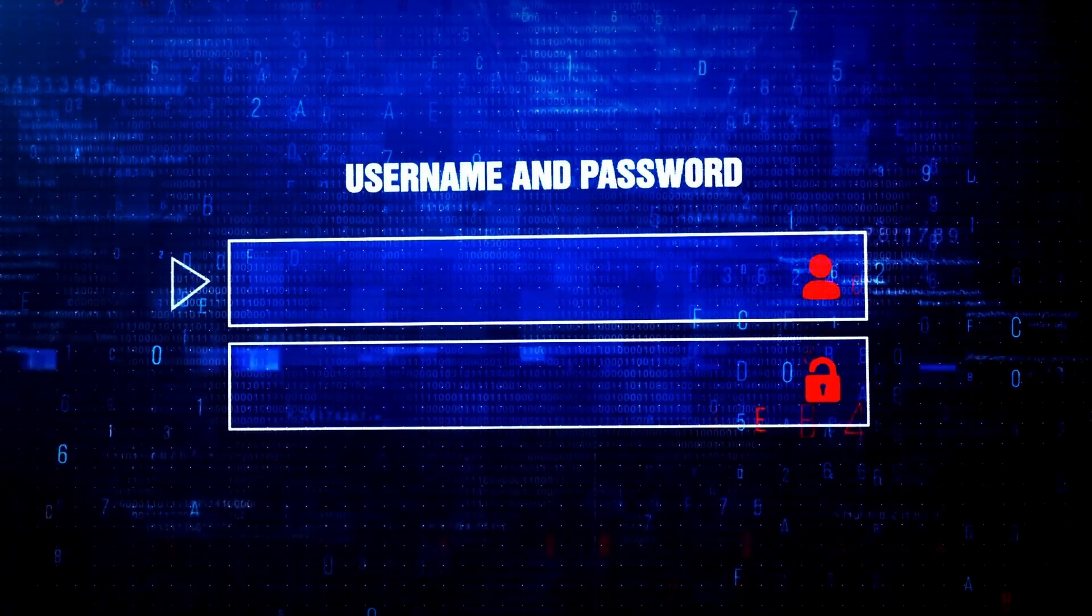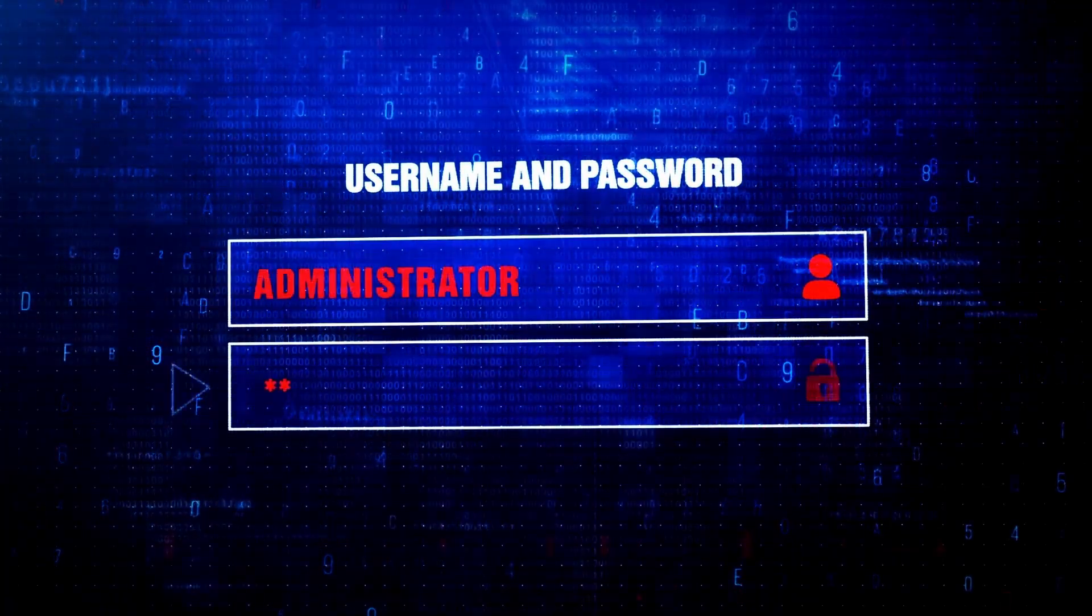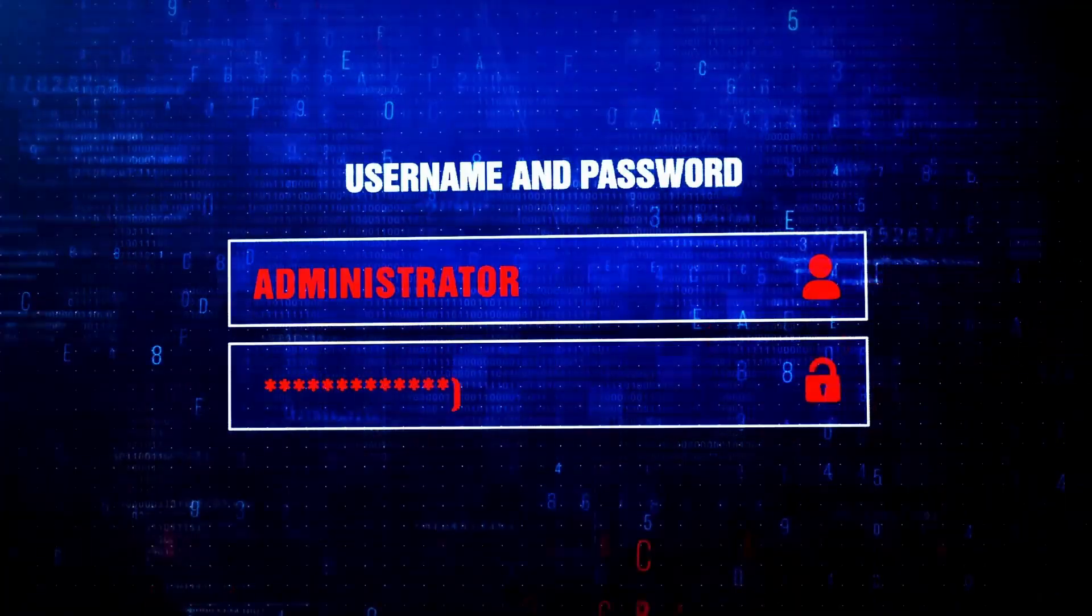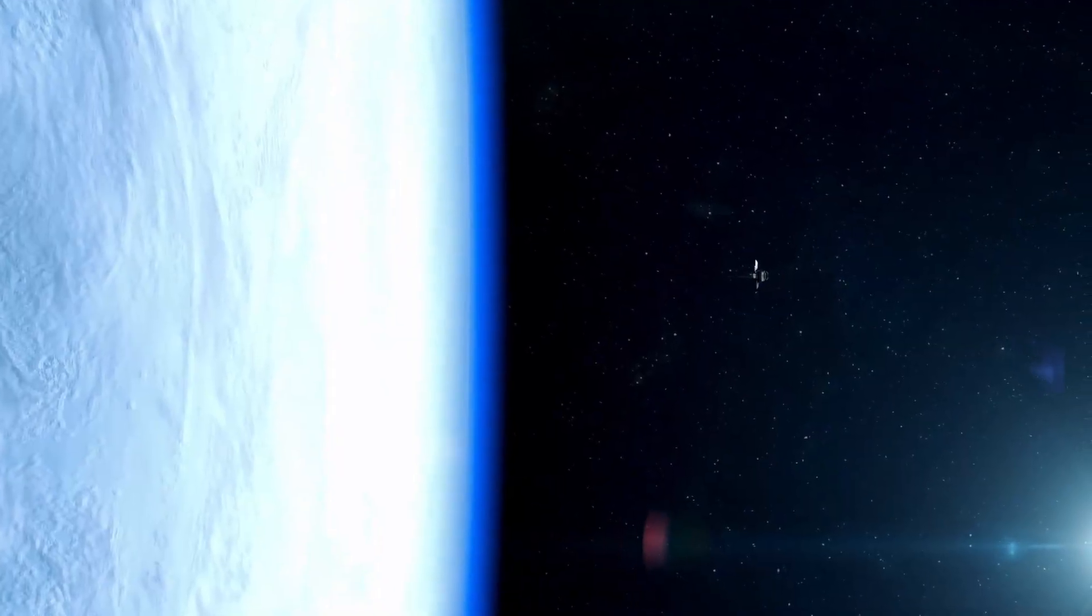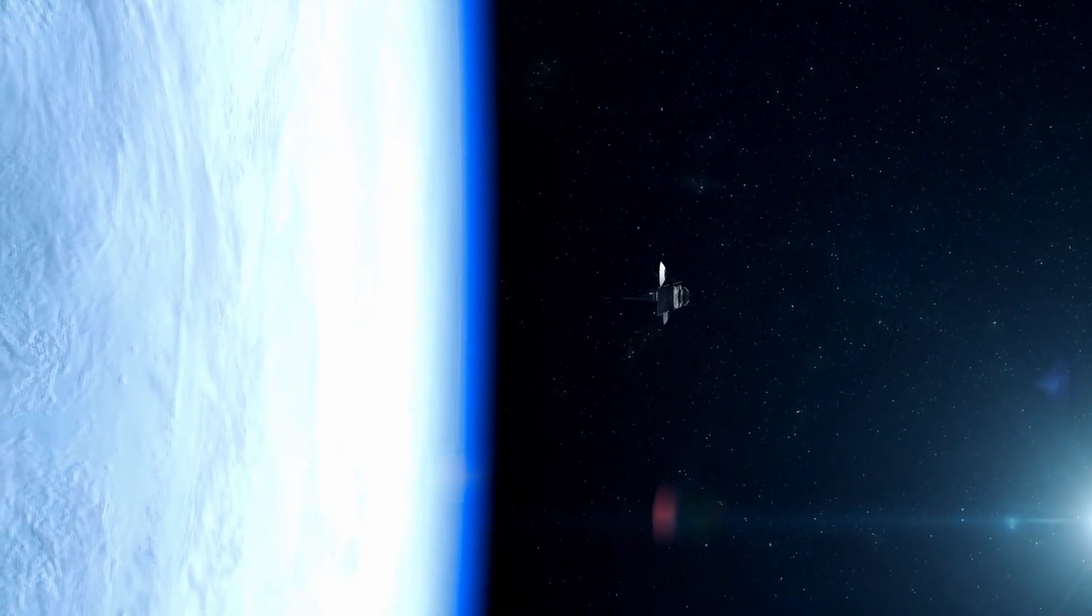As Proxima b orbits Proxima Centauri, it experiences day and night cycles similar to Earth, with daytime absorbing solar heat and nighttime bringing cooler conditions.